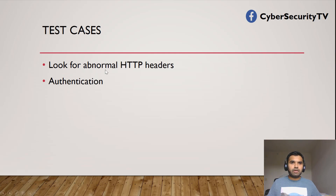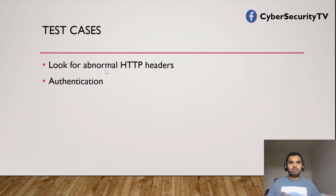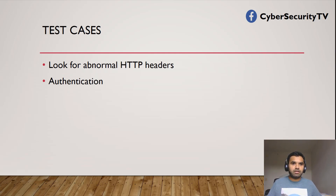Sometimes you might have an older API version that supports authentication but may not have the same controls as the newer API version. Versioning is a big thing in APIs — every time there's a change they generate a new version while the old one should be deprecated. If it isn't deprecated, that leads to bigger exploitation.